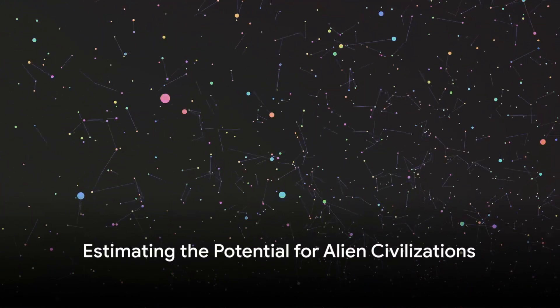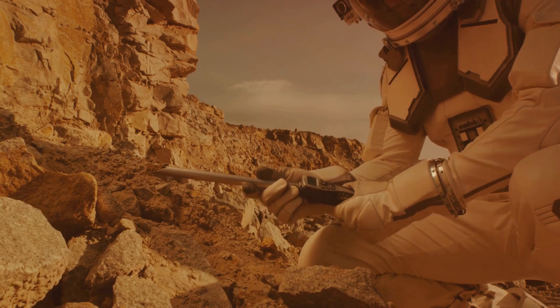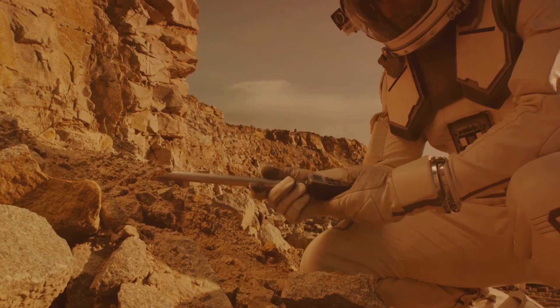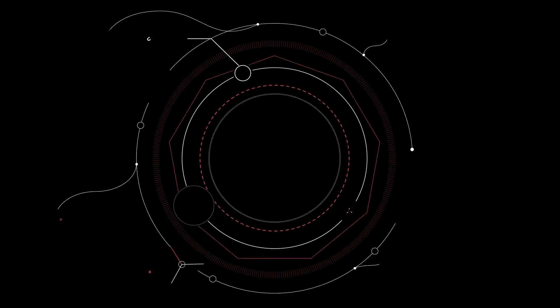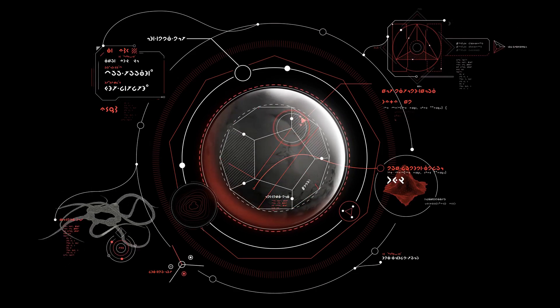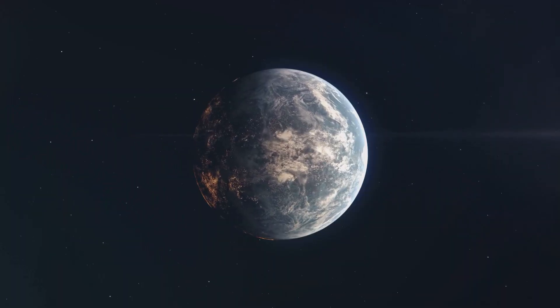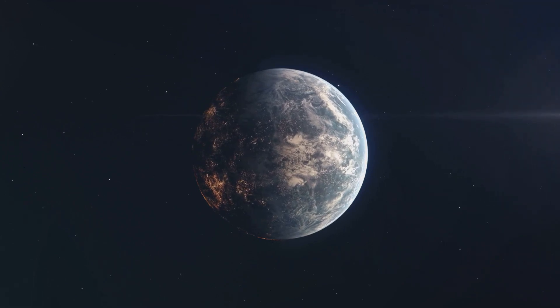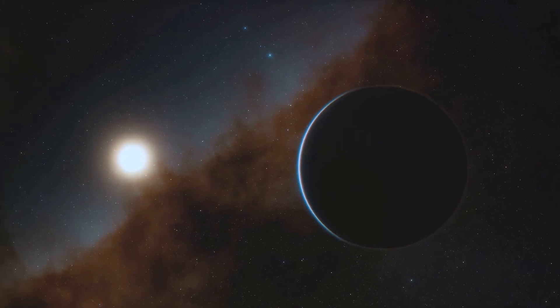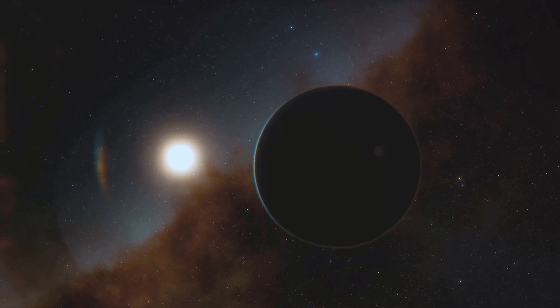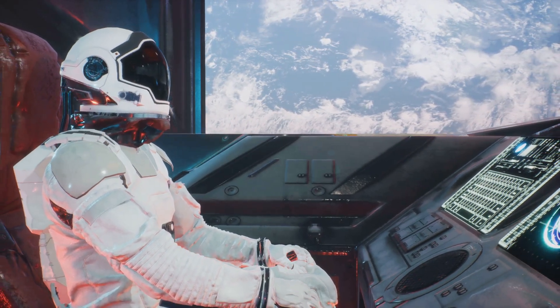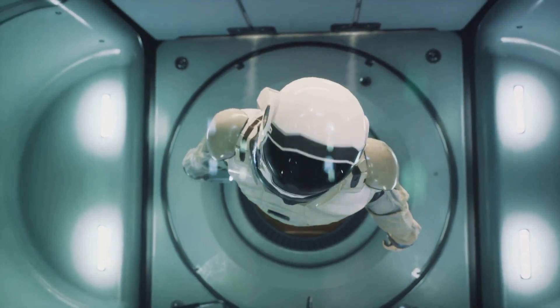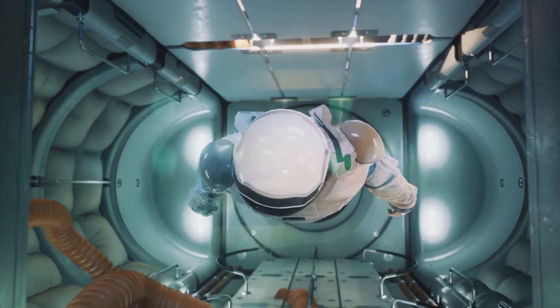What if we could estimate the number of civilizations in our galaxy? This question has intrigued scientists for decades and has led to the creation of a fascinating field of study known as astrobiology. Astrobiology seeks to understand the potential for life beyond Earth by studying the origins, evolution, and distribution of life in the universe. One of the key tools used in astrobiology to estimate the potential for extraterrestrial civilizations is the Drake equation. Named after Frank Drake, the American astronomer who developed it in the early 1960s, the Drake equation is not meant to give a precise number, but rather to stimulate scientific dialogue and research. The Drake equation consists of seven factors that we must consider when estimating the number of civilizations in our galaxy.